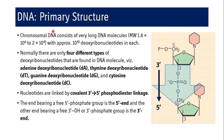Coming to the primary structure of DNA: chromosomal DNA consists of very long DNA molecules. Each chromosome is basically a very long DNA molecule supercoiled on itself. Its molecular weight is 1.6 × 10⁶ to 2 × 10⁹, with approximately 10¹⁰ deoxyribonucleotides in each molecule of DNA.